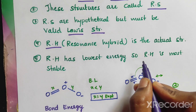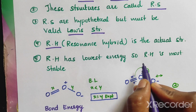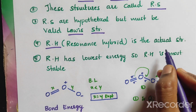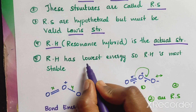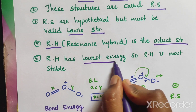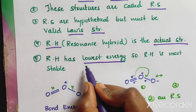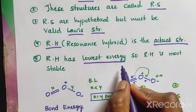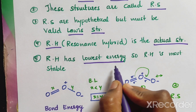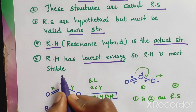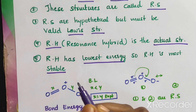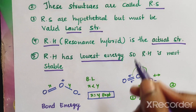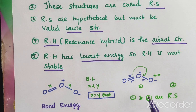If the resonance hybrid is the actual structure, then the energy is the least. So that will be the most stable structure. These are some key points regarding resonance.